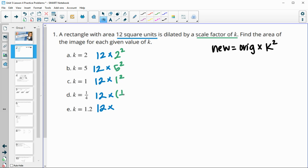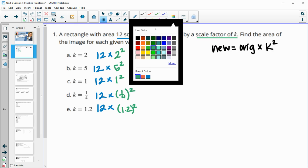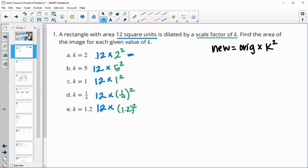1 squared, 1 fourth squared, and 1.2 squared. So that's going to be our original times our scale factor squared. So here would just be 12 times 4, which is 48 units squared. This one's going to be 12 times 25, which is 300 units squared for our new area.